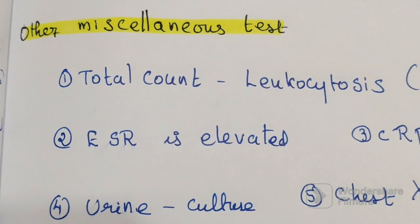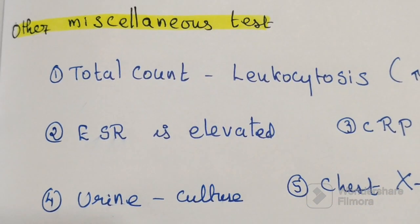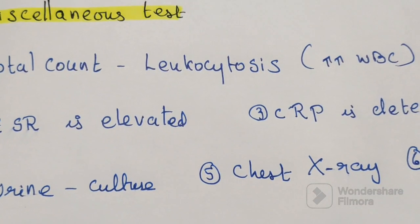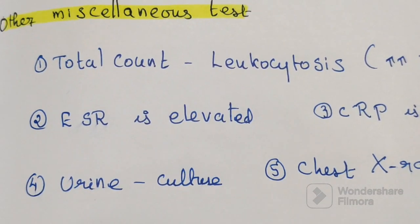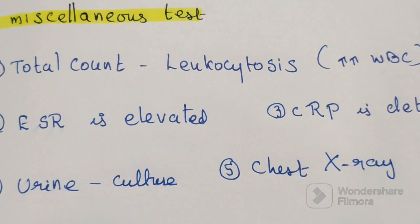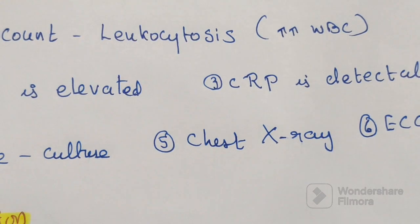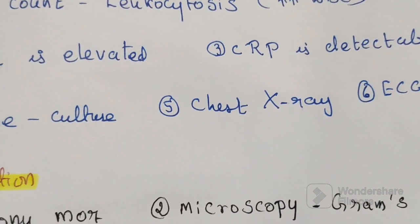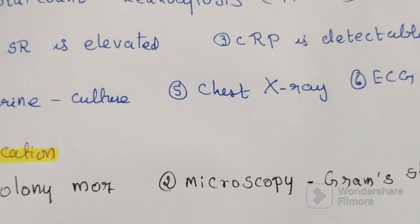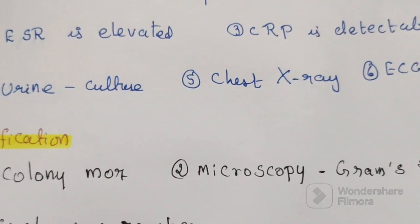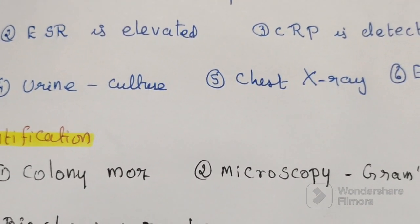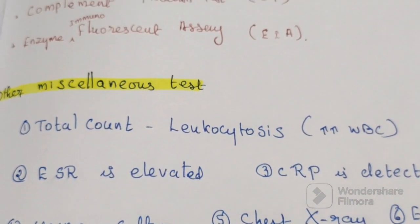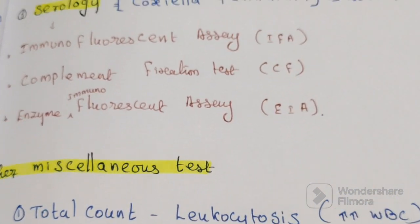Other miscellaneous tests for diagnosis of bloodstream infection include complete blood count — where leukocytosis indicates an increased amount of WBCs — erythrocyte sedimentation rate (ESR), which is elevated, and C-reactive protein, which is detectable. Urine is taken for culture, chest X-ray is performed, ECG, and echocardiograph for detection of vegetation. Detection of bacterial toxins — both exotoxin and endotoxin — is also performed.